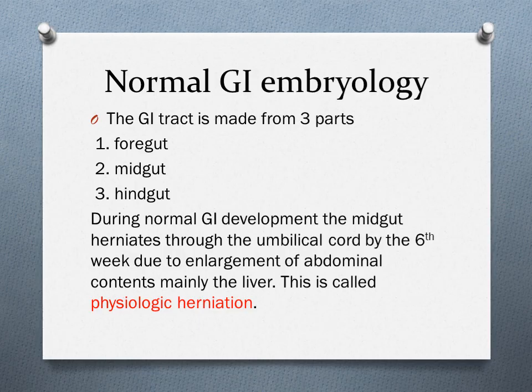In the embryo, the GI tract is divided into three parts: the foregut, the midgut, and the hindgut. A very important process happens called physiological herniation, where the developing midgut herniates through the umbilical cord at around the sixth week.